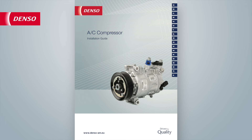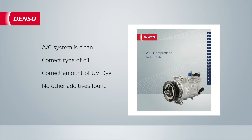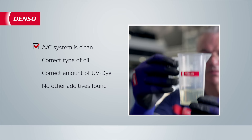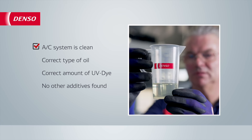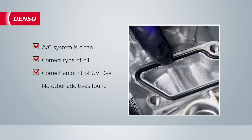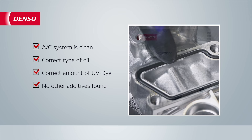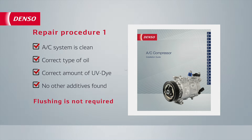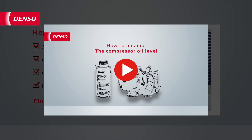Now let's take a look at different conditions leading up to a specific repair procedure. If the AC system is clean, the correct type of oil is inside the cycle, the correct amount of UV dye is used, and there are no other additives inside the system, then flushing with refrigerant is not required and you can continue by following repair procedure one. In this case, you have to balance the oil of the compressor — please check out the oil balancing video.